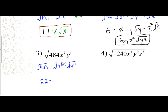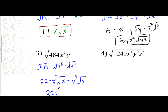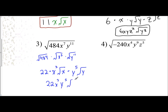For x to the 7th: how many pairs do you have in 7? You have 3 pairs, because 7 divided by 2 is 3 with a remainder of 1 — so 1 x remains inside. For y to the 11th: take 11 divided by 2, that's 5 pairs with a remainder of 1, so the exponent of 1 goes inside. On the outside, you have 22x cubed, y to the 5th. On the inside, you have the square root of x times y. That is the final answer.